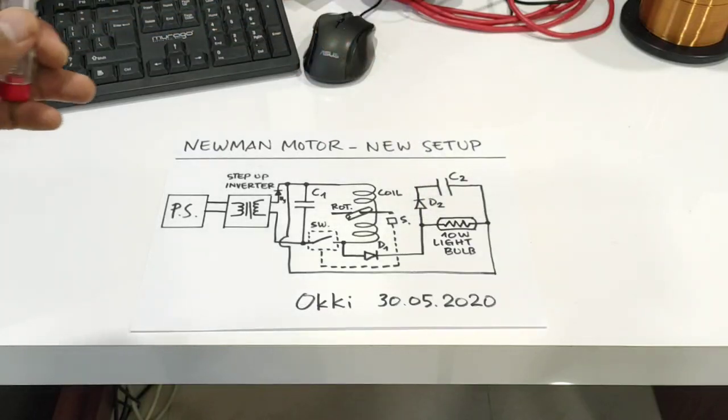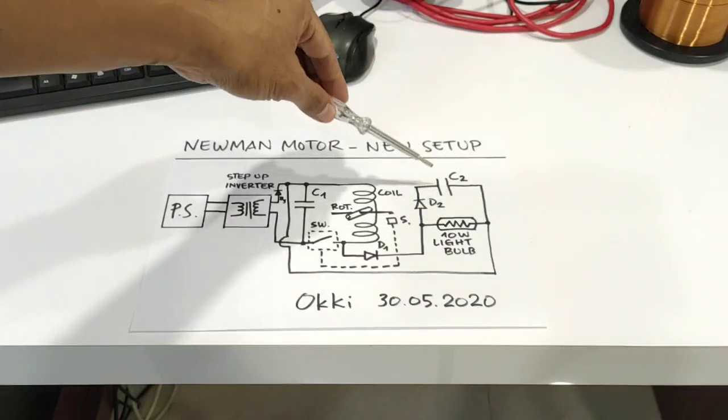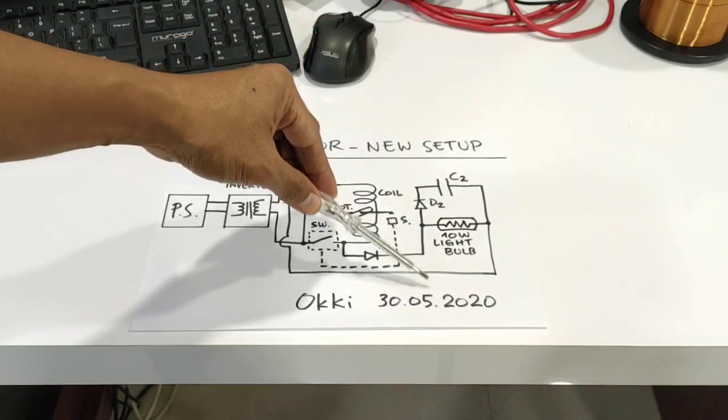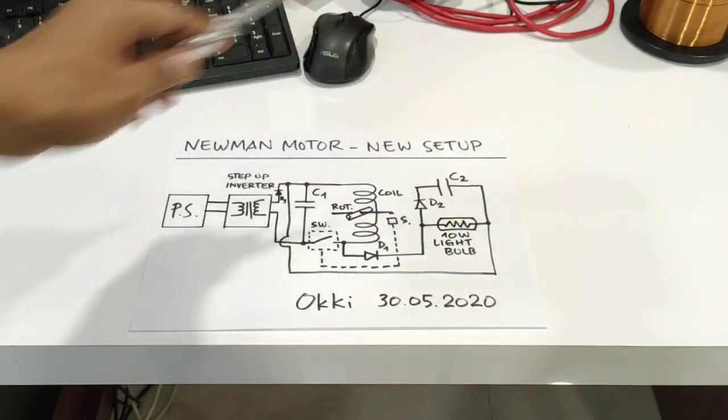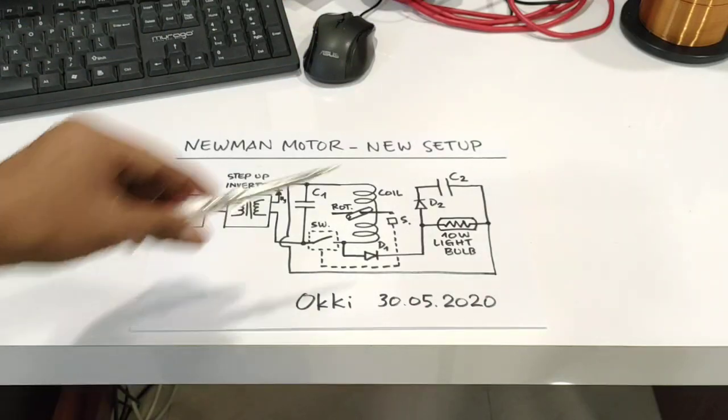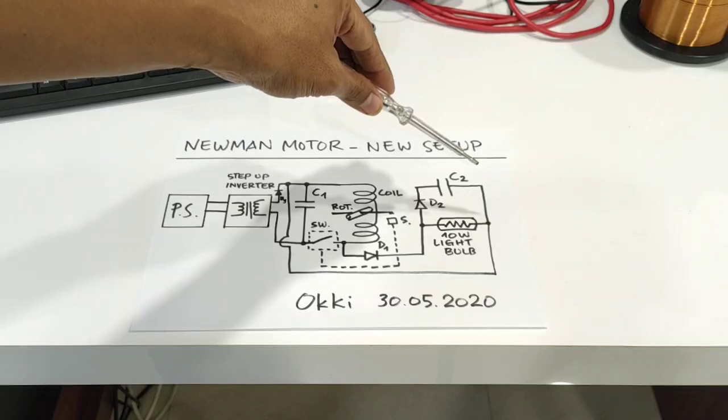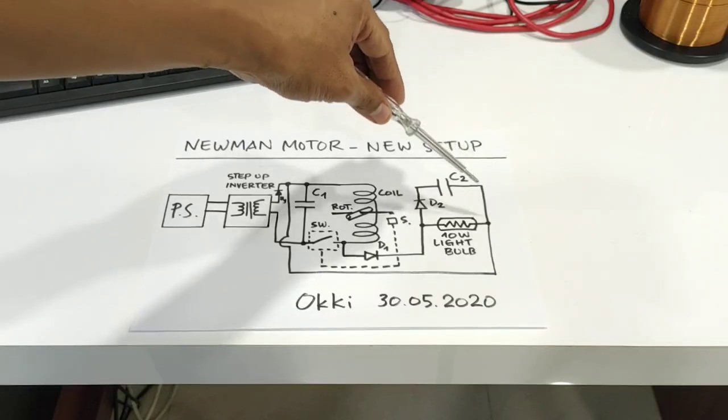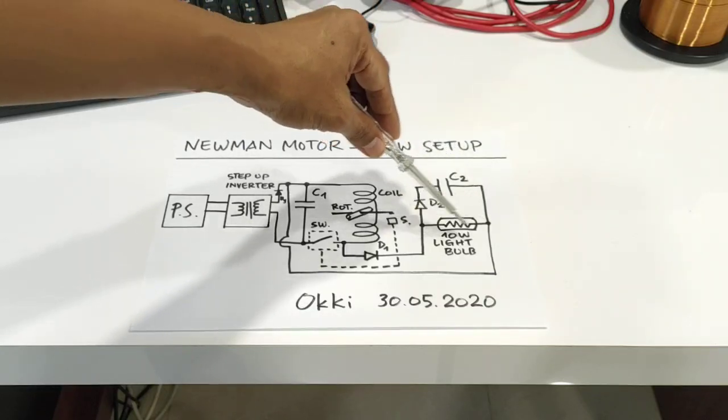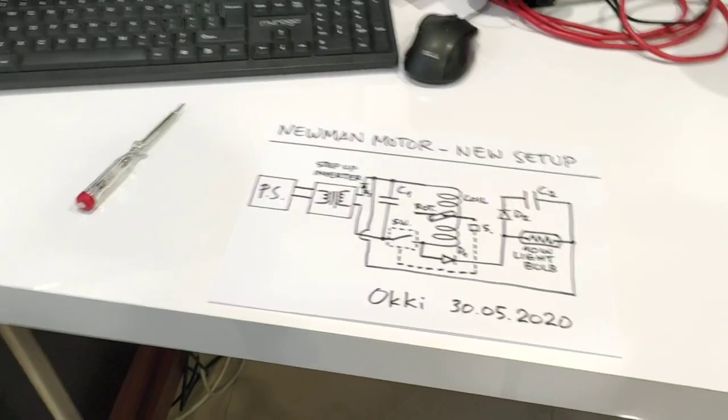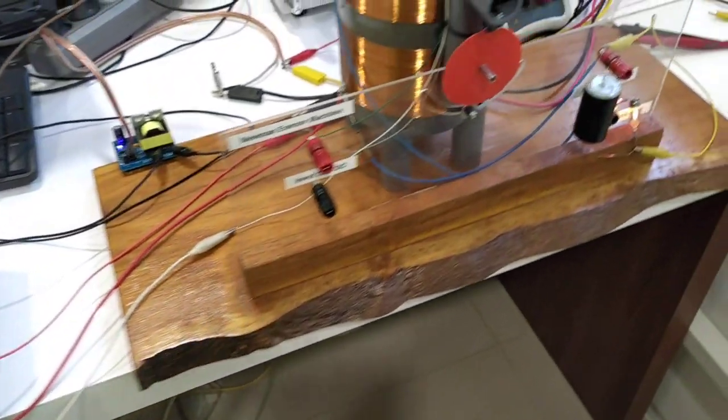It means that the capacitor is connected parallel to the load, and then we can measure the power that goes to the light bulb. Okay, let's see the setup.